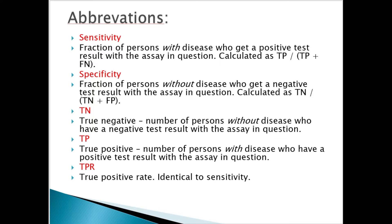Sensitivity is the fraction of persons with disease who get a positive test result, calculated as TP (true positive) divided by true positive plus false negative. Specificity is the fraction of persons without disease — those with a good prognosis — who get a negative test result, calculated as true negative divided by true negative plus false positive. True negative is the number of persons without disease who have a negative test result. True positive is the number of persons with disease who have a positive test result. TPR (true positive rate) is identical to sensitivity.